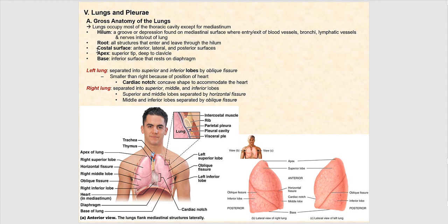The apex is the tip — the superior part of the lung directly deep to the clavicle, which is the opposite of the apex of the heart, which lies inferiorly. Then we have the base, which is the part of the lung that rests on the diaphragm. The left lung has two lobes — the superior and inferior lobe — separated by the oblique fissure. This is why our left lung has two secondary or lobar bronchi.